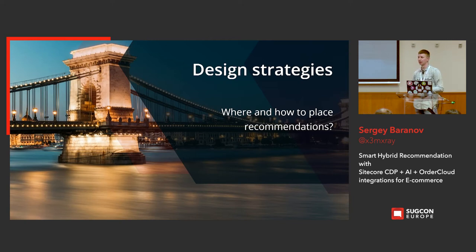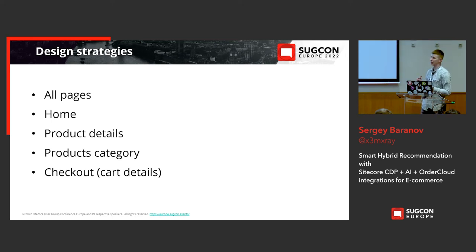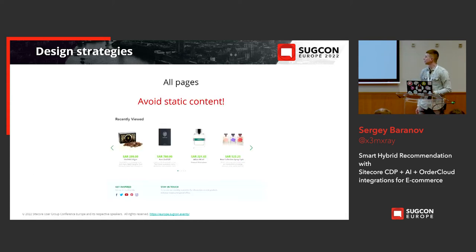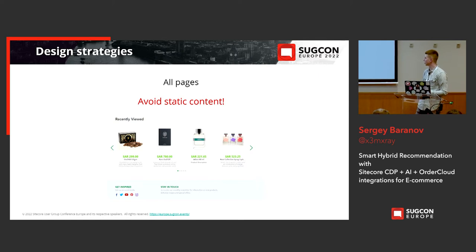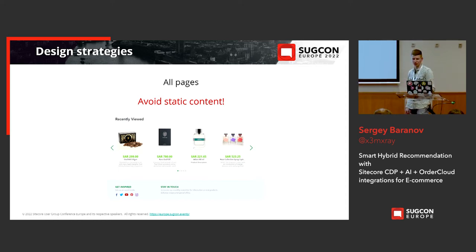Let's move to design strategies — where and how you should place recommendation widgets on your website. We will consider the following locations: all pages, homepage, product details page, product category page, and checkout page. The biggest mistake of many websites is showing static content across many pages, which is very annoying and makes your recommendations start to work like advertising rather than real recommendations. A good example of a widget usable on all pages is recently viewed items, because it's dynamic and updates in real time as you navigate.